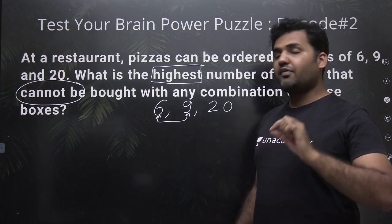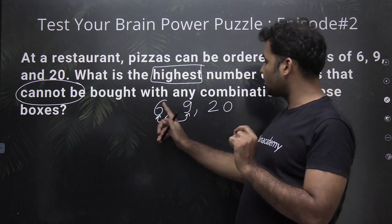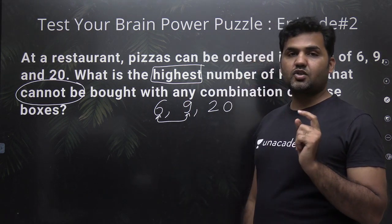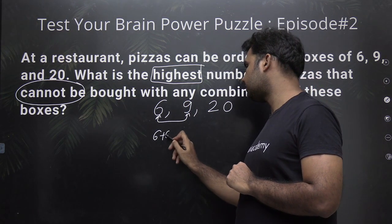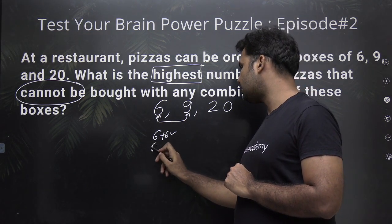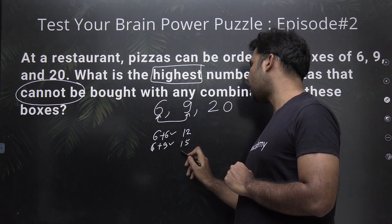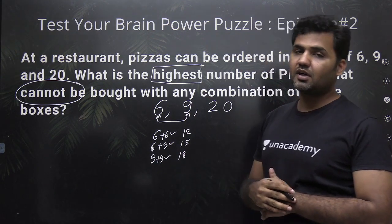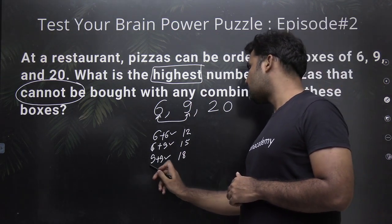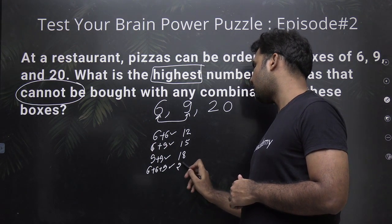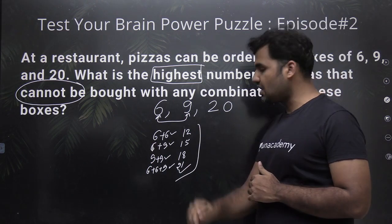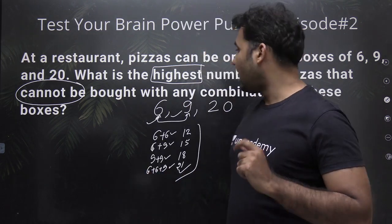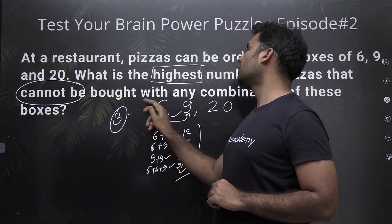Except the smallest number, 3. With a combination of 6 and 9, you can get any multiple of 3. For example, if I want to purchase 12 pizzas, I can use 2 boxes of 6. If I want to purchase 15 pizzas, 9 plus 6 equals 15. If I want to buy 18 pizzas, I can use 2 boxes of 9. I can buy 21 pizzas using 2 boxes of 6 and one box of 9. So any multiple of 3 — except 3 itself — can be obtained with a combination of 6 and 9, because these two numbers are consecutive multiples of 3.